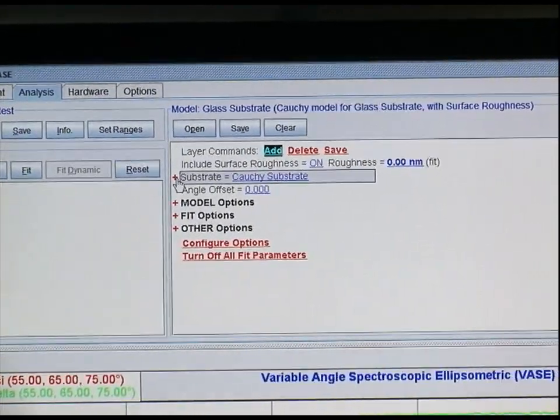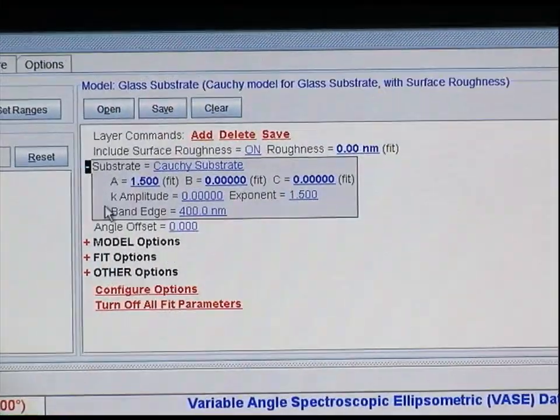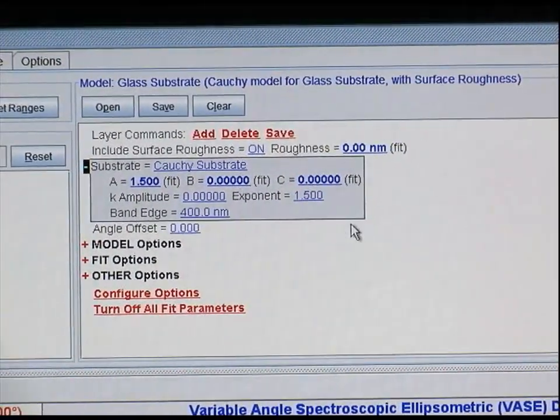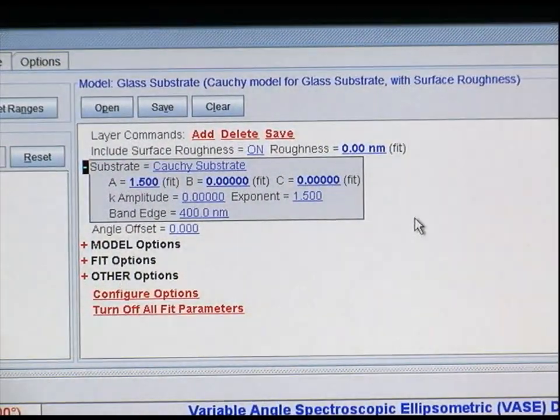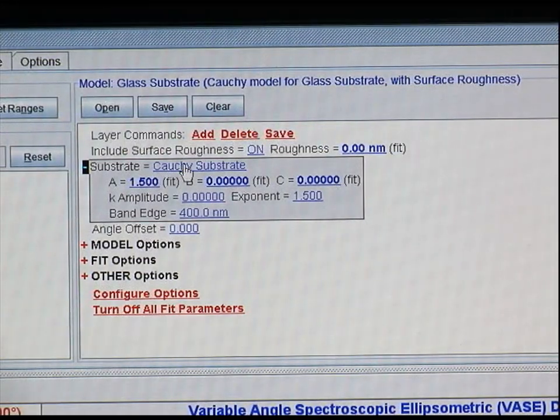The first thing we need to do is maximize our substrate and see all of these parameters inside this box. In our example, since we have a glass slide which is a transparent substrate, we want to use what's called a Cauchy model of dispersion to model this sample. With that, A is basically the refractive index of the substrate, whereas B and C actually model the behavior of the dispersion of the sample.